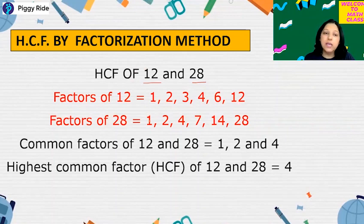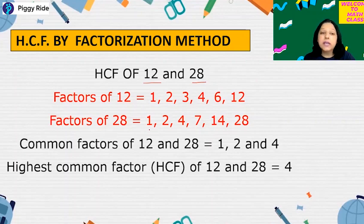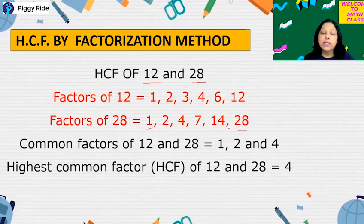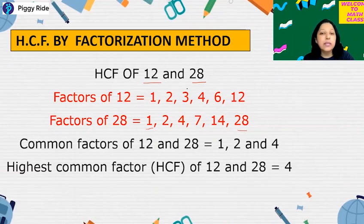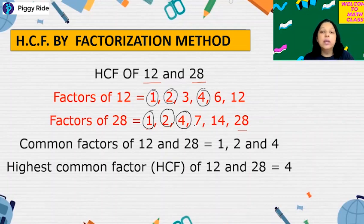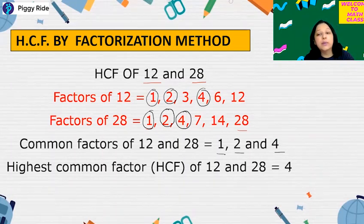6 and 12. And the second number is 28, so we will write all the factors of 28. Factors means the numbers which can divide 28. 1 is a factor of every number and every number is a factor of itself. So 1 and 28 will be factors of 28, and the other numbers will be 2, 4, 7, 14. Now after writing all the factors, the common factors between 12 and 28 are 1, 2, and 4. So the highest common factor is 4.